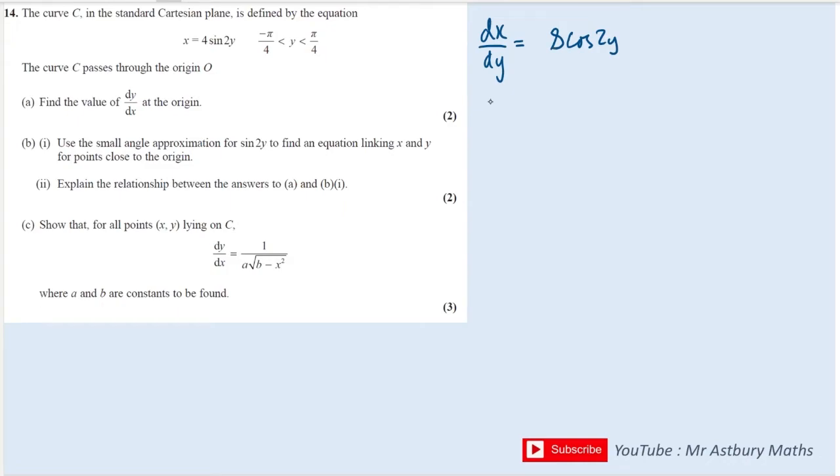I can now swap it over, so I get dy by dx and I take the reciprocal of this side as well, so I get 1 over 8 cos of 2y.